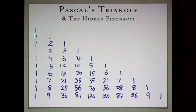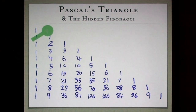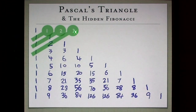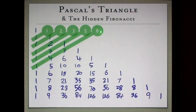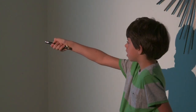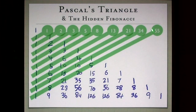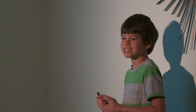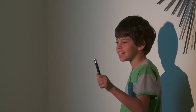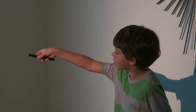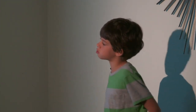This is the same triangle, only slid over. When you add the numbers diagonally, you get one, two, three, five, eight, thirteen, twenty-one, thirty-four, and fifty-five — which are all Fibonacci numbers. Blaise Pascal didn't even realize this during his lifetime; other people found out that the Fibonacci sequence was hidden inside his triangle.